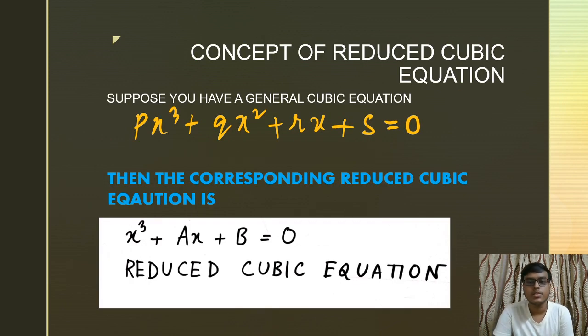Concept of reduced cubic equation: suppose you have a general cubic equation px³ + qx² + rx + s = 0, then the corresponding reduced cubic equation will be x³ + ax + b = 0, where the coefficient of x² is zero.